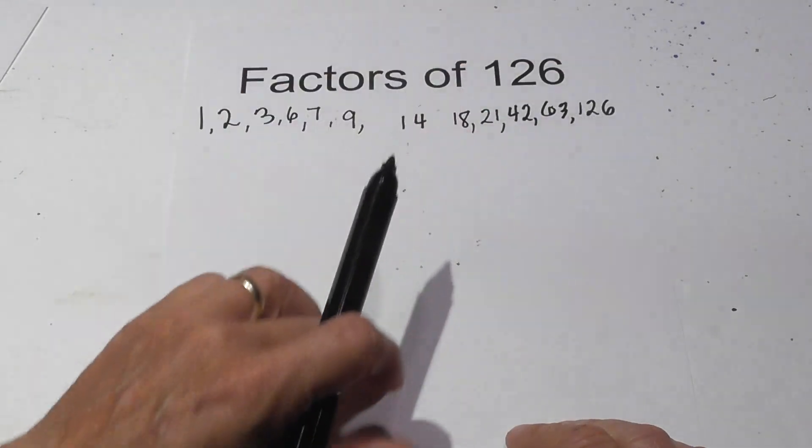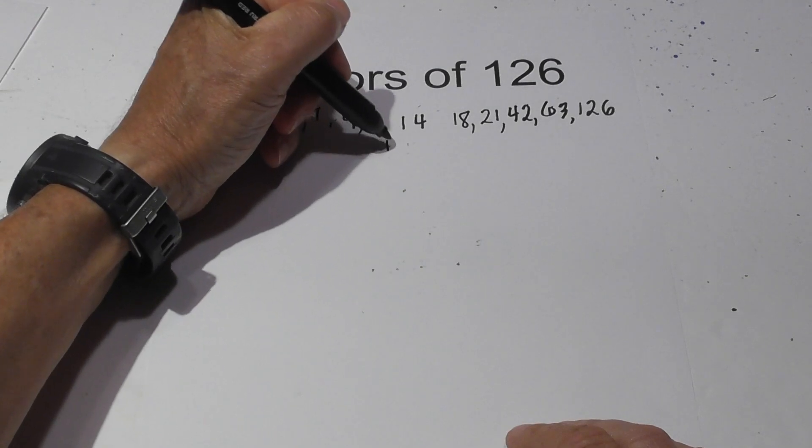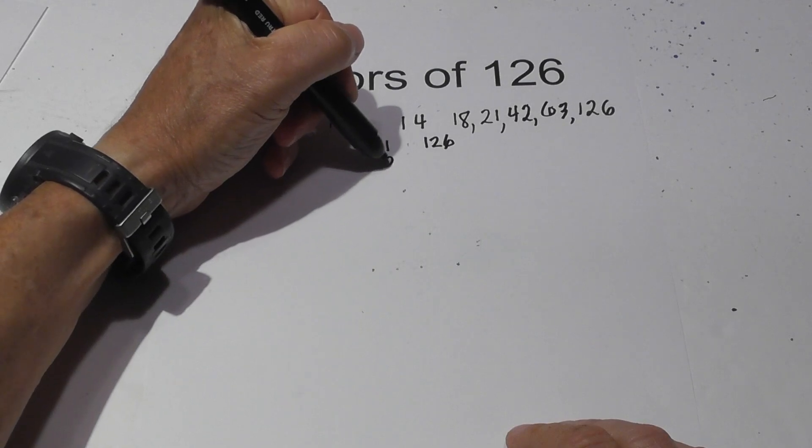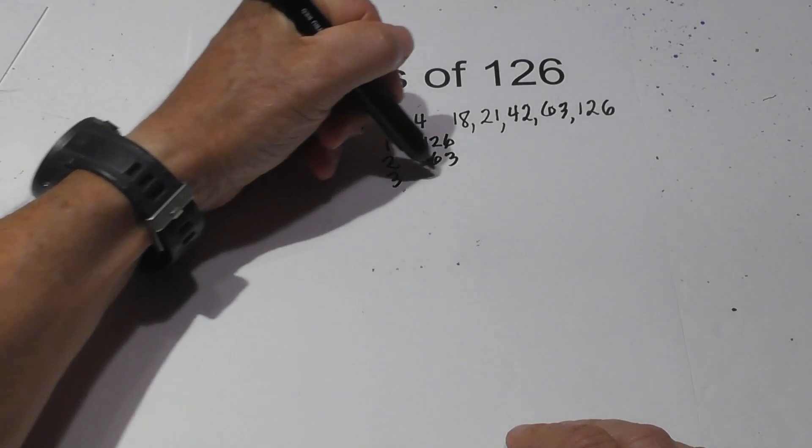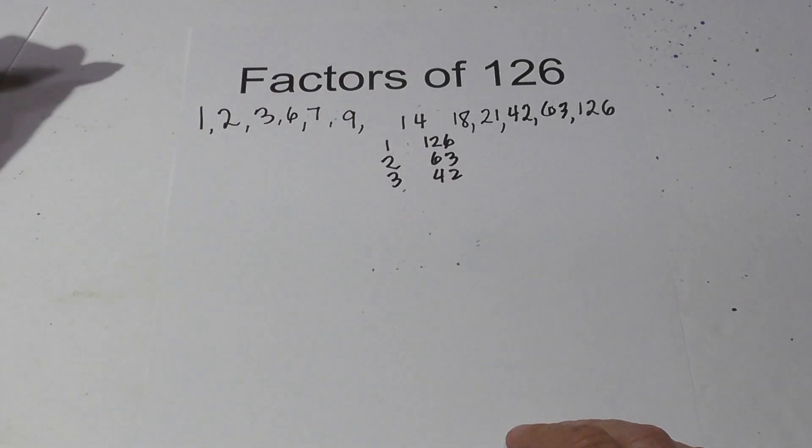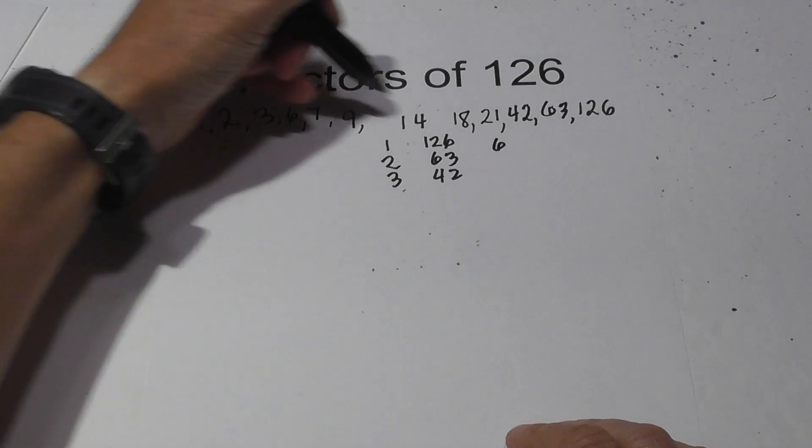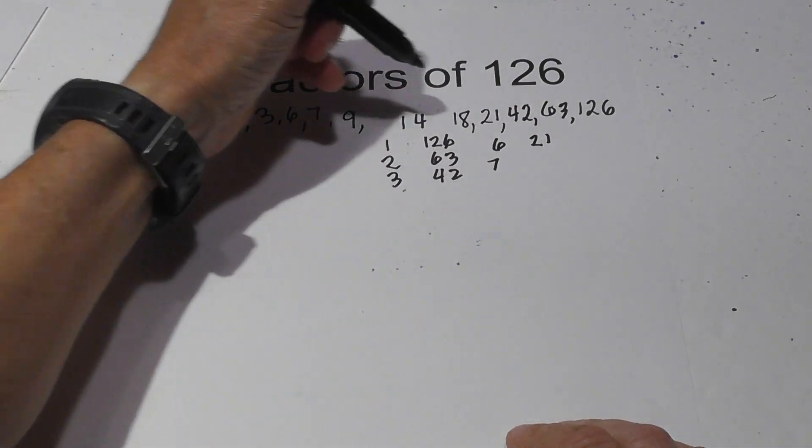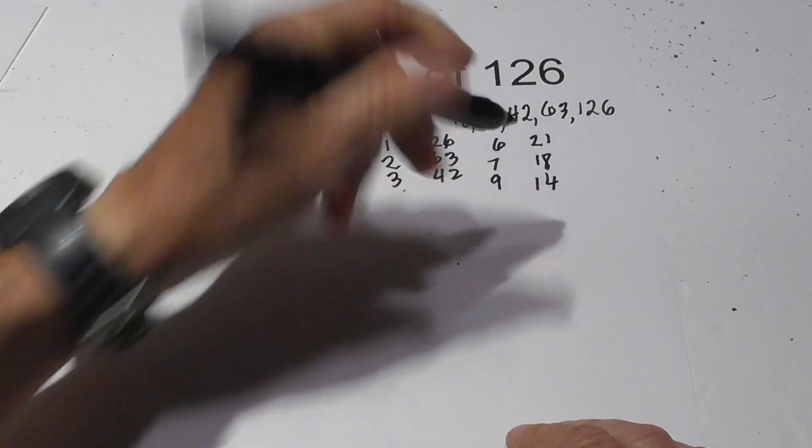If you like those in pairs: 1 times 126, 2 times 63, 3 times 42, I'm going to move over here, 6 times 21, 7 times 18, 9 times 14.